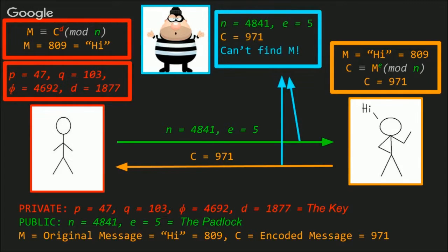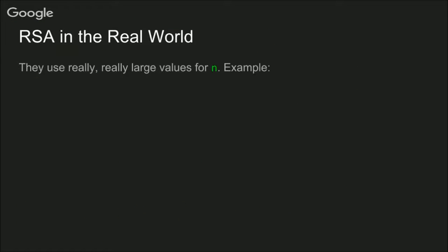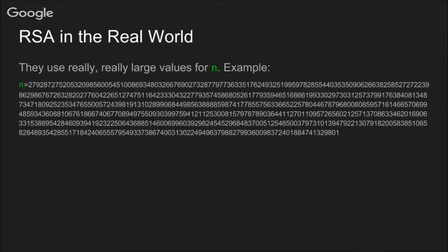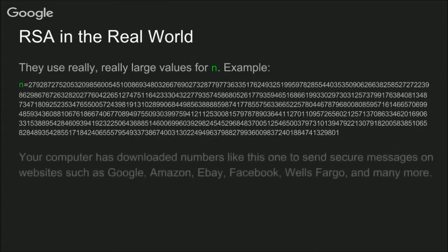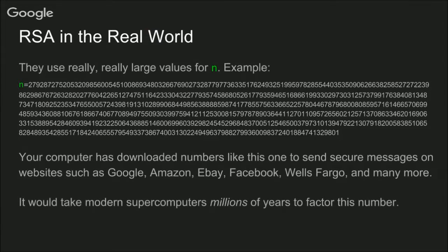Now if someone wants to come along and steal our information, all they have to use is N, E, and C. But that's not enough information to find M, because they won't be able to factorize N. In the real world, we use really, really large values for N. For example, this value of N has over 600 digits. Your computer probably has lots of large numbers such as this one stored on it for the purpose of RSA encryption, and it just isn't feasible to factor this number with modern technology.